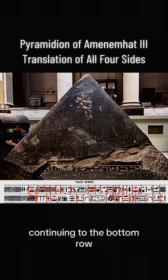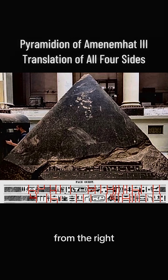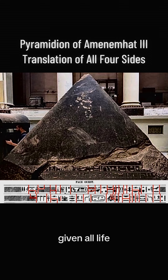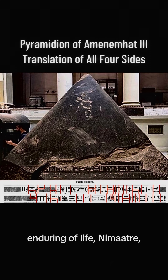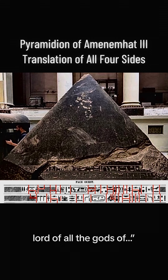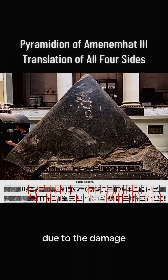Continuing to the bottom row from the right: Words spoken by Ptah, given all life, stability, power, to the good God, golden Horus, enduring of life, Nimaatre. Words spoken by Sokar Osiris, lord of all the gods, of... Unfortunately, the text ends here due to the damage on the Pyramidion.